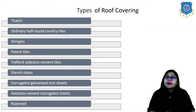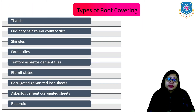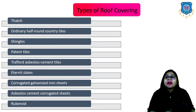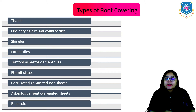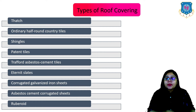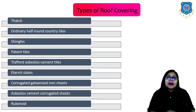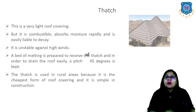Now let us see the different types of roof covering. The first one is thatch, then the ordinary half round country tiles, shingles, patent tiles, Trafford asbestos cement tiles, cement tiles, eternity slates, corrugated galvanized iron sheets, asbestos cement corrugated sheets, and lastly the rebroil.